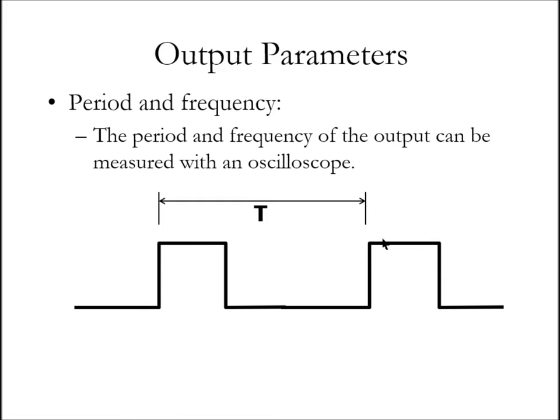The period is labeled T because it's measured in time, typically in seconds. The frequency is how many periods occur in a second. Obviously, high frequency is many repetitions in a second, low frequency is fewer. Period and frequency are the inverse of one another.